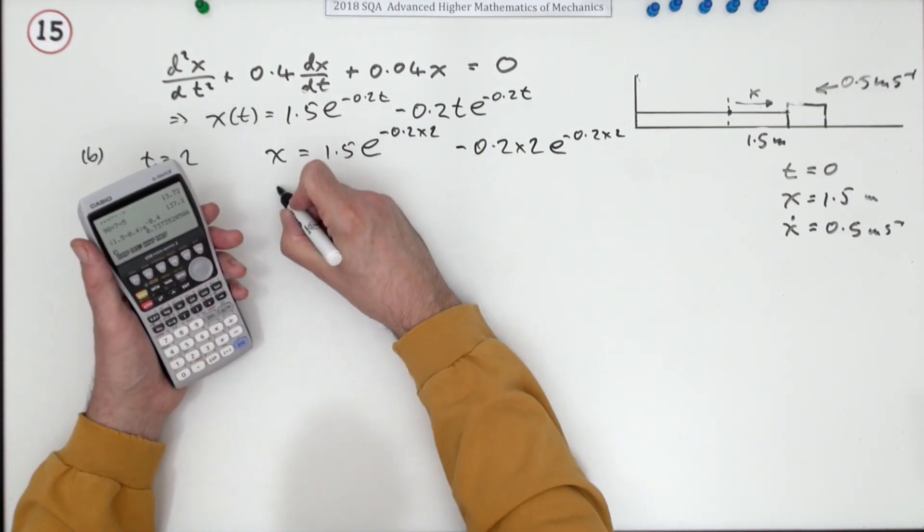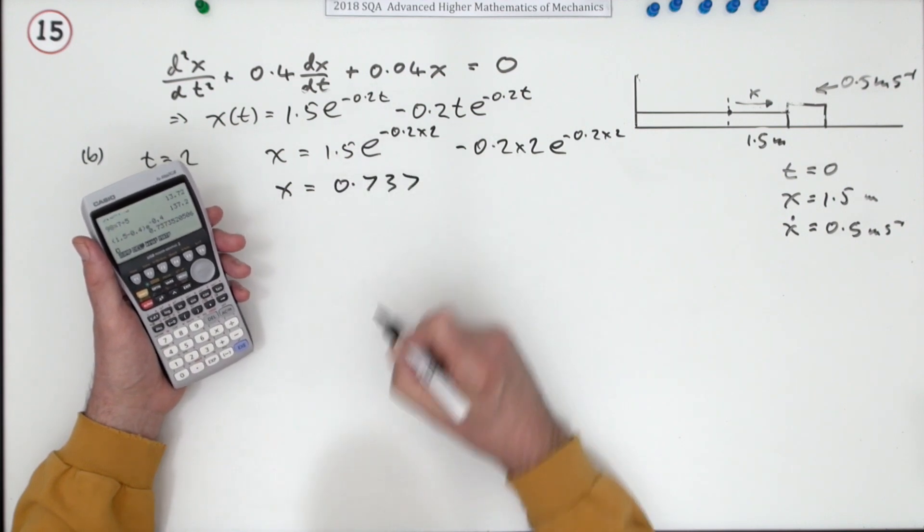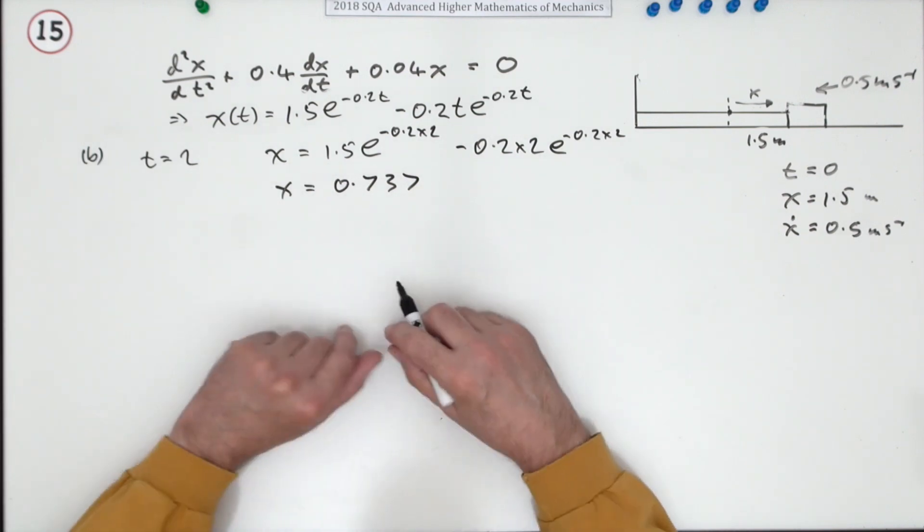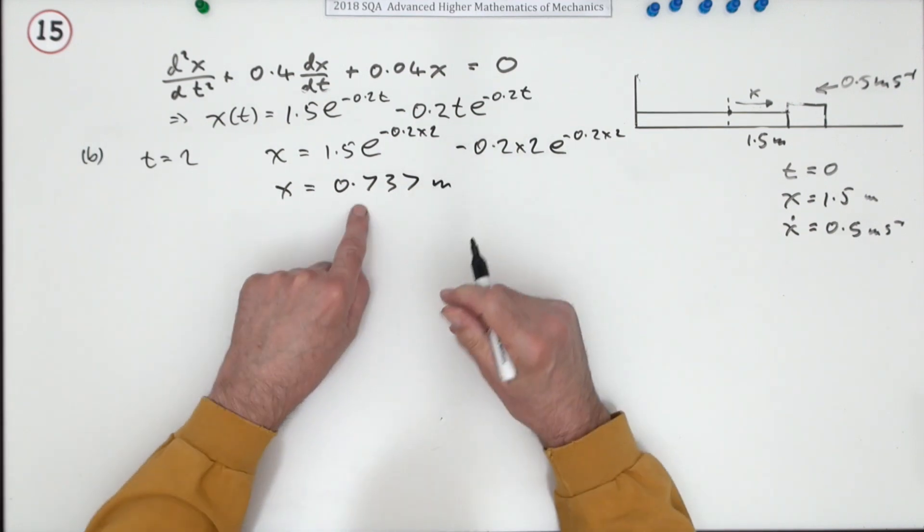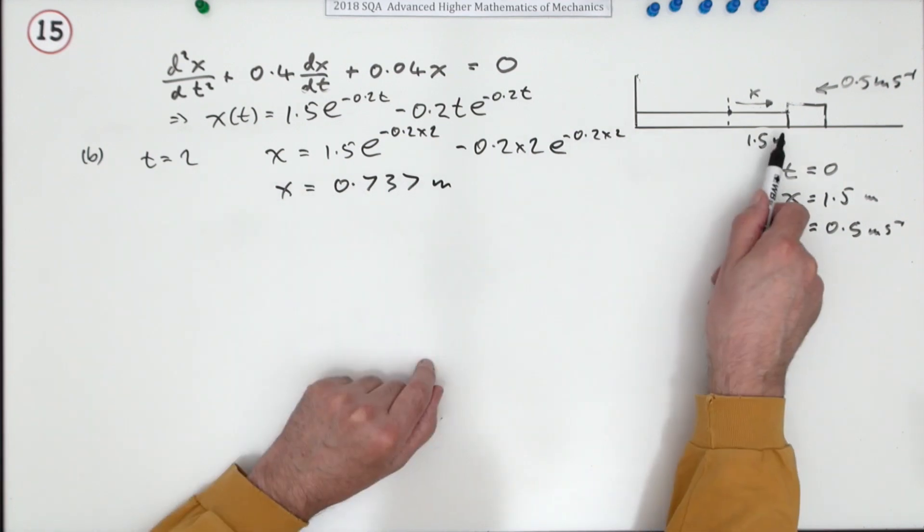And when you do that, you get x equals 0.737. Just took that as a common factor just to see when pressing some buttons. Meters. However, that's not the final answer. That's its displacement after two seconds.